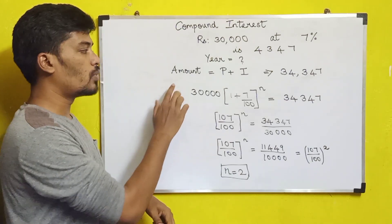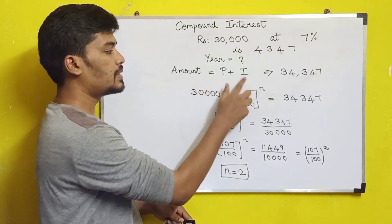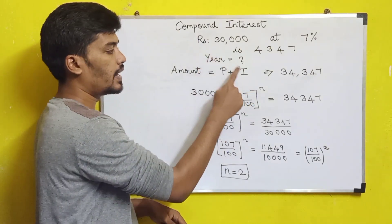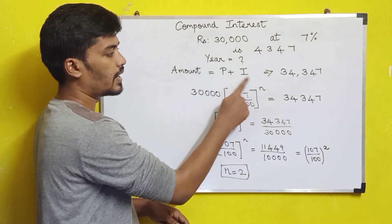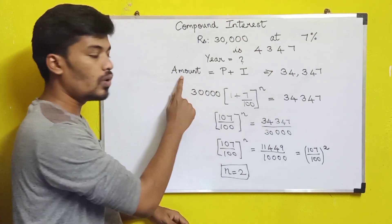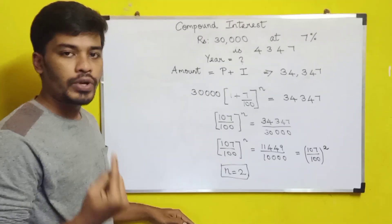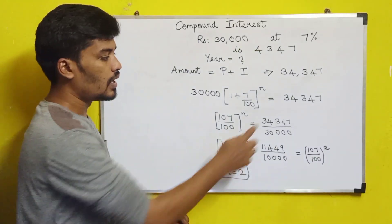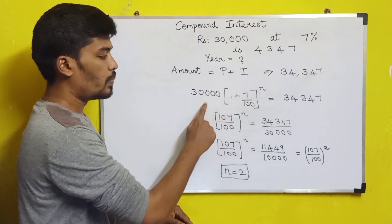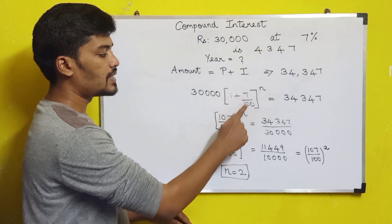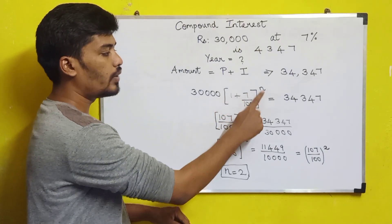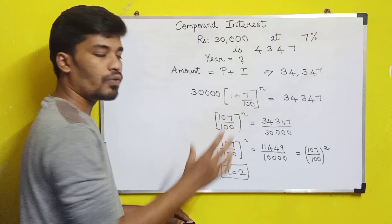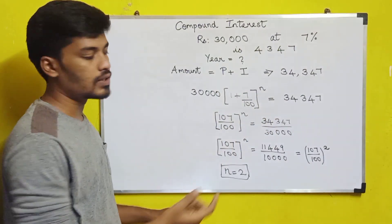Previously we discussed simple interest. Amount is equal to principal plus interest. For compound interest, the formula is: Amount = P × (1 + r/100)^n. So this is the amount formula for compound interest.